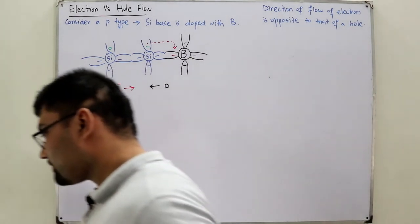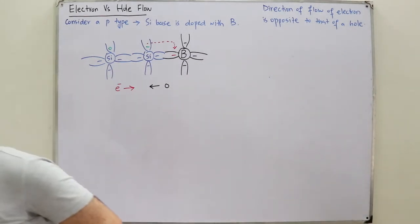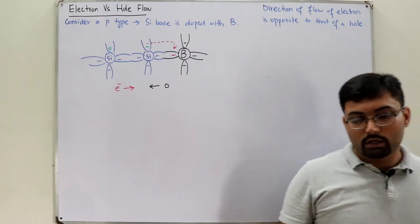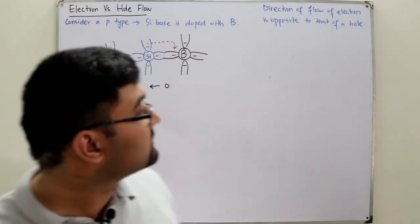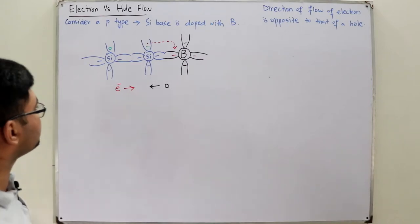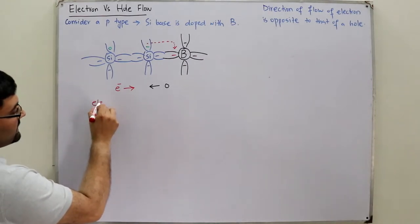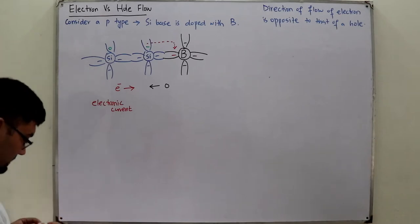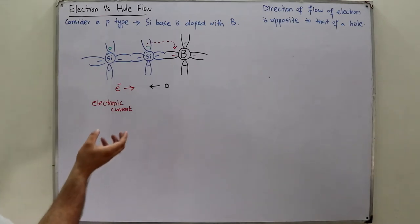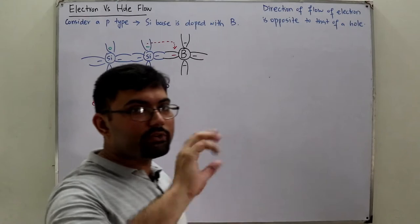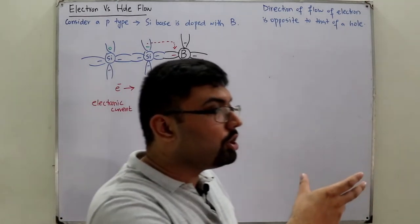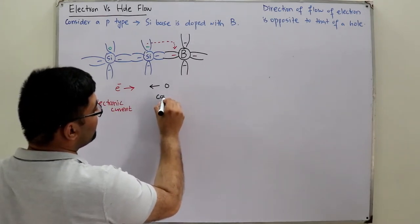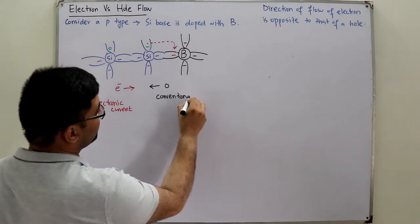Basically, the current is the flow of electrons, which is called electronic current. The flow of electrons is called electronic current, and the actual current in the circuit is this electronic current. The direction of the conventional current, if we consider it, is opposite to the electronic current. The movement of holes — which is not a physical current — is what we call the conventional current, and we suppose this to be the direction of current in our textbook.